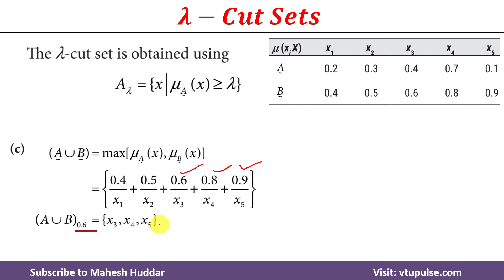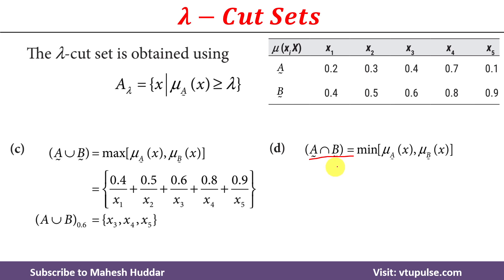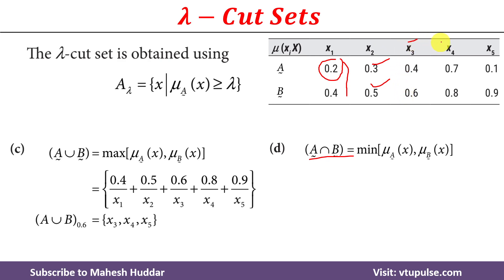Now we discuss how to calculate the lambda cut set for the intersection of two fuzzy sets. First we need to calculate the intersection of A and B. The intersection of two fuzzy sets A and B is always equivalent to the minimum of the membership value of x in fuzzy set A or fuzzy set B. For x1, the membership values are 0.2 and 0.4 — the minimum is 0.2, so 0.2 is present in the intersection. For x2, between 0.3 and 0.5, the minimum is 0.3. Similarly we calculate membership values for x3, x4, and x5.